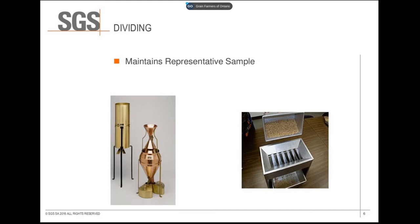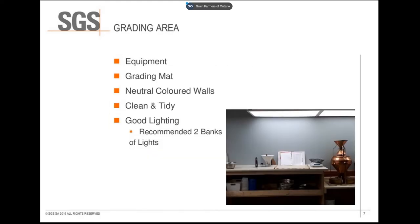If dividing isn't done, the sample will no longer be accurate and will skew the proper grade. The grading area should be set up with all required testing equipment such as a scale, moisture meter, and test weight funnel. The wall should be a neutral color to prevent the appearance of off-colored grain, and the area should be clean and tidy to prevent contamination. It is also recommended to have two banks of lights in the grading area.